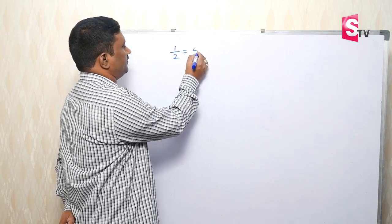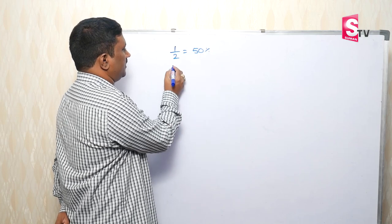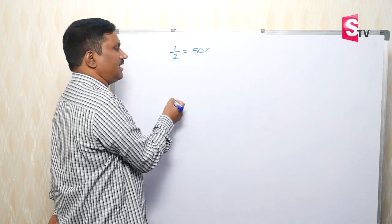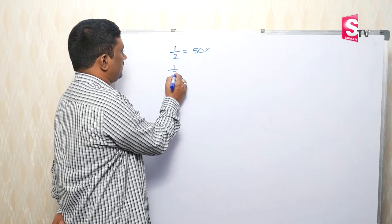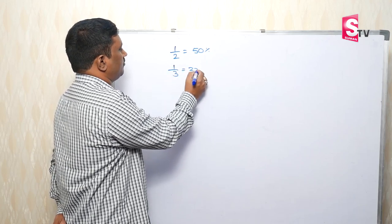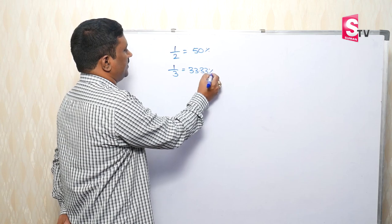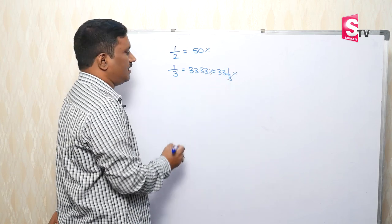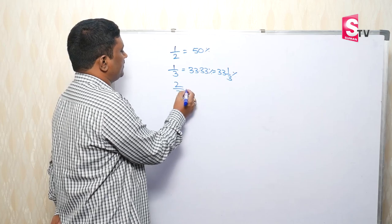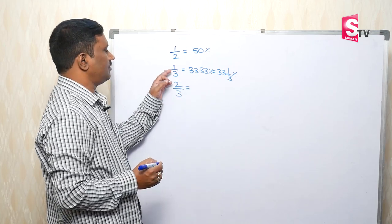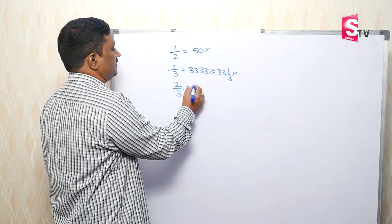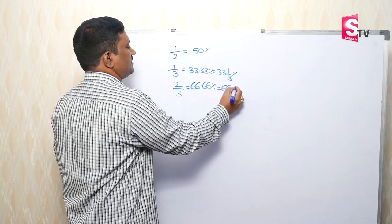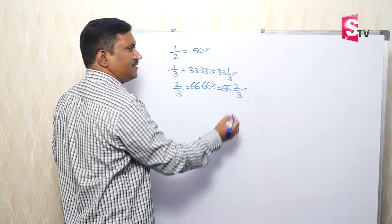1 by 2 is 50% and 2 by 2 is 1. 1 is 100%. 1 by 3 is 33.33%. 2 by 3 is 2 multiplied by 1 by 3, and 2 multiplied by 33.33% is 66.66%. Okay.